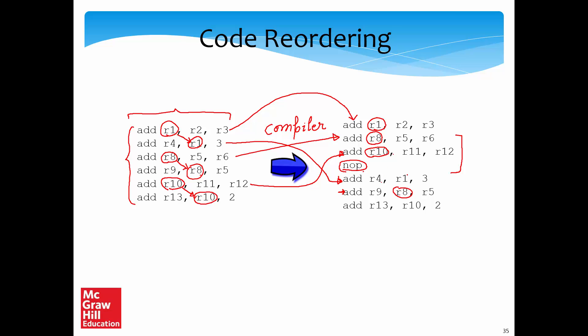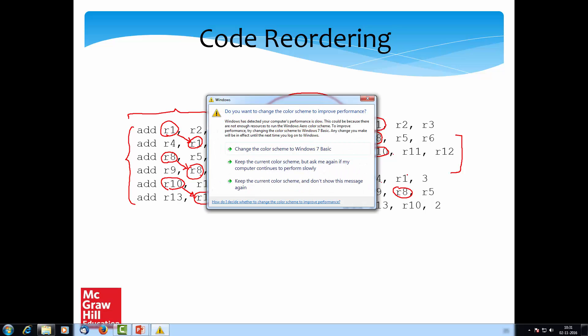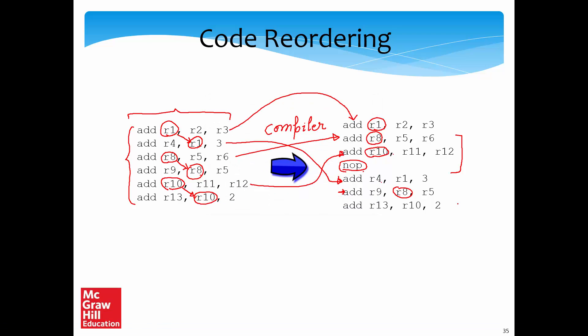We can have an algorithm implemented and executed by the compiler to reorder code without affecting correctness, as we have done here. It may still be necessary to insert a few NOPs, but we want to minimize them because a NOP means nothing is being done in that stage. There are many algorithms in the literature that reorder code while minimizing the number of NOPs required.